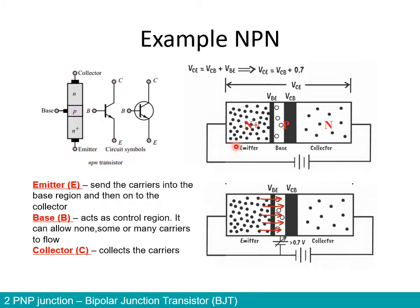Now we need to look at the voltage across the regions. As we connect it to the power supply, there are three voltages we can measure. The first one is VCE — the voltage between the collector and emitter. There are two other voltages: VBE, the voltage at the depletion region between base and emitter, and VCB, the voltage across the depletion region between the base and collector. If we write a KVL, a Kirchhoff's voltage law, using these three voltages, we find that VCE equals VCB plus VBE.